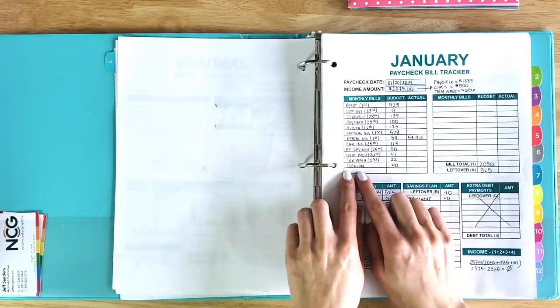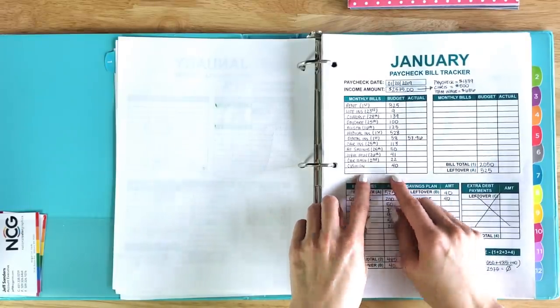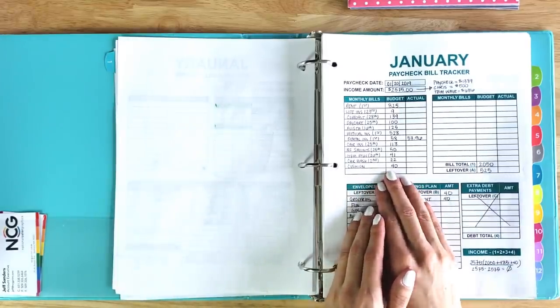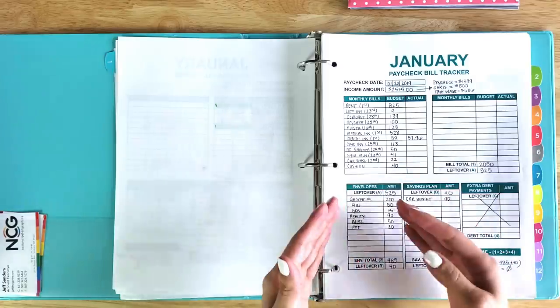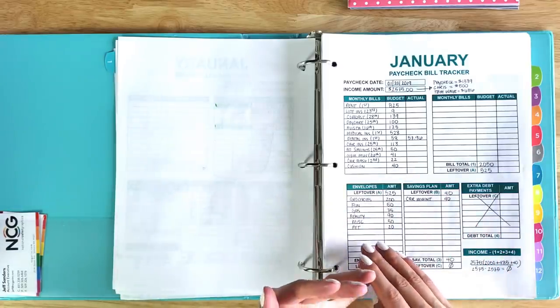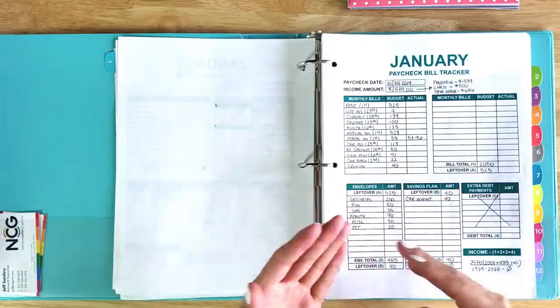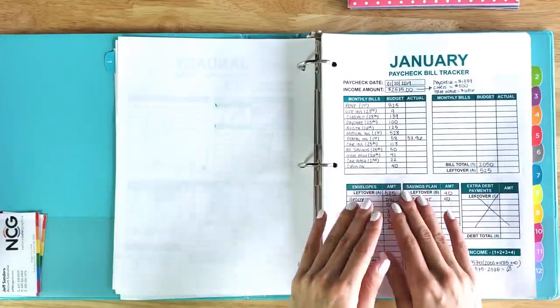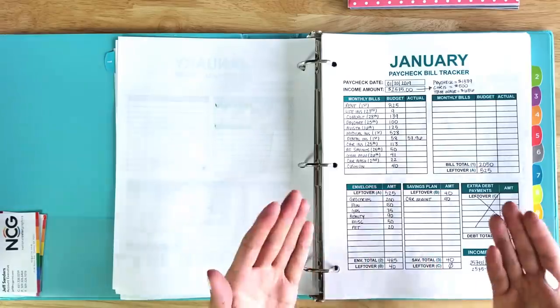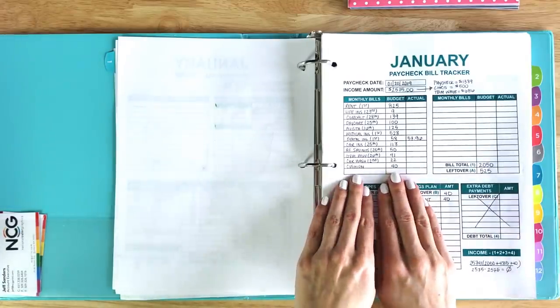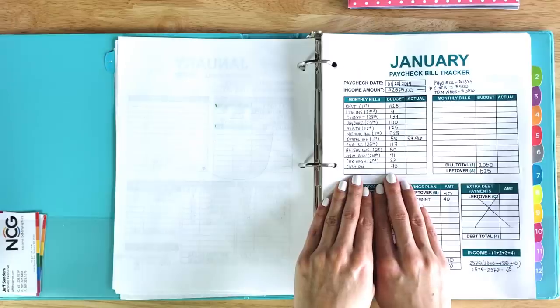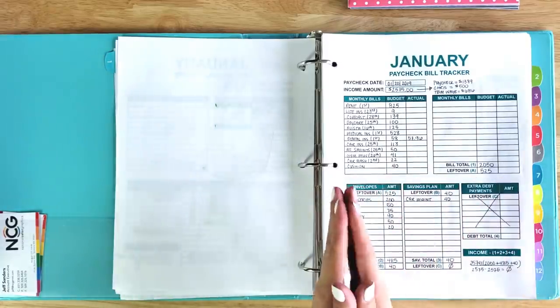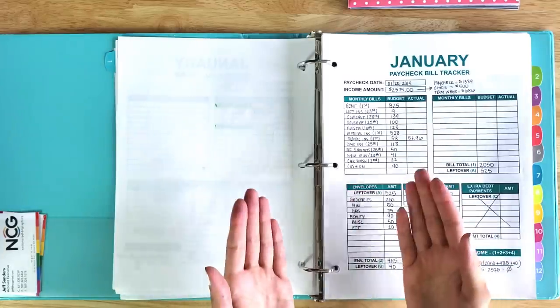I started what's called a checking account cushion. $40 of every paycheck goes into my checking account cushion. It literally just sits in my checking account. It's there in case the bill is higher than expected or I have to maybe do an unplanned online shopping, to protect myself from overdraft fees and unplanned expenses. I like to keep about $1,000 at all times in my checking account.